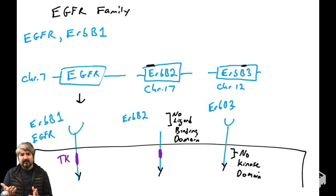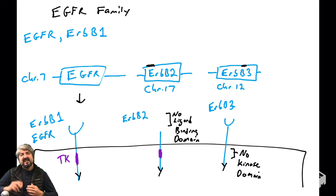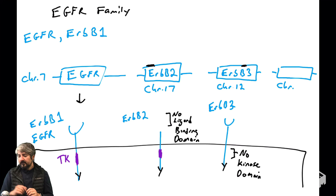How did ERBB3 lose its kinase? Gene duplication — millions of years of evolution where this gene mutated and evolved away its tyrosine kinase domain. Is it a receptor tyrosine kinase? Well, it's a receptor and it's in the EGFR family, which is a family of receptor tyrosine kinases, but it's missing a really important part. It will still participate in dimerization and transphosphorylation — we'll see how in the next video.